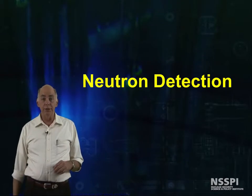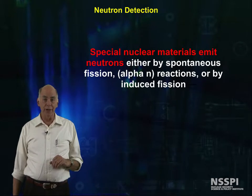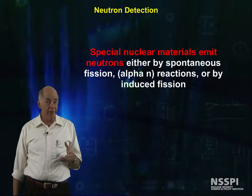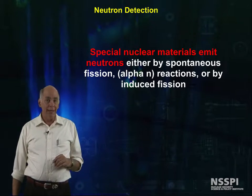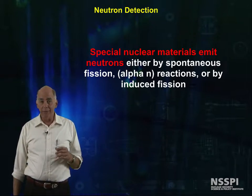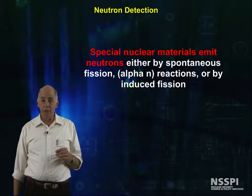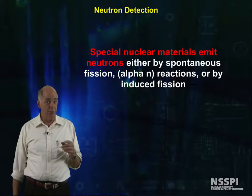Now let's turn our attention to the detection of neutrons. As I'm sure you remember from our discussion of special nuclear materials, these materials emit neutrons, either by spontaneous fission, alpha-N reactions, or by induced fission. Detection of neutrons is sometimes the best choice for detecting these types of materials, because free neutrons very rarely occur spontaneously except in these materials.